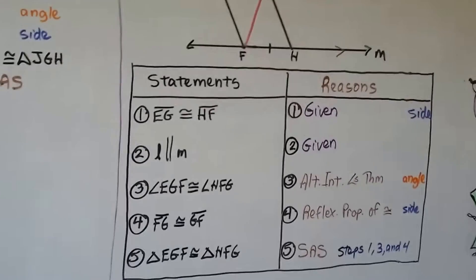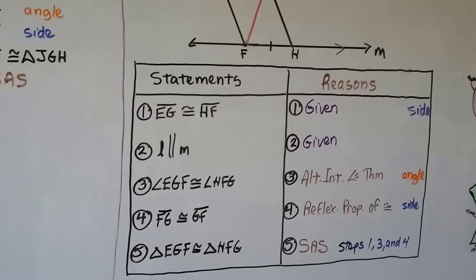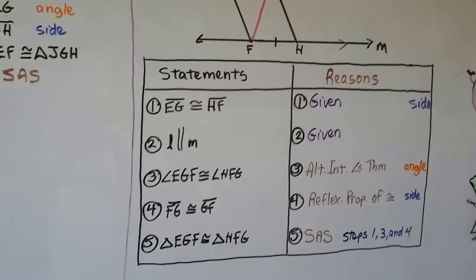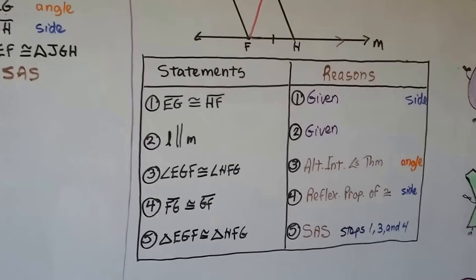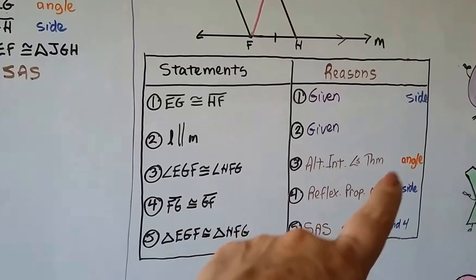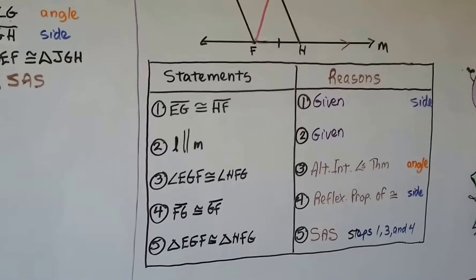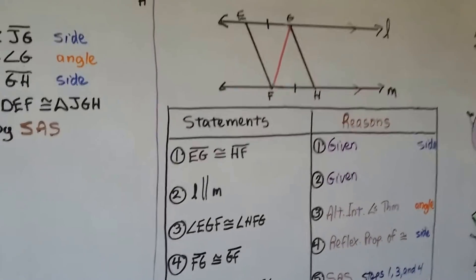Which means we've got number five: triangle EGF is congruent to triangle HFG. And that's side angle side from steps one, three, and four. We have a side, an angle, and a side.